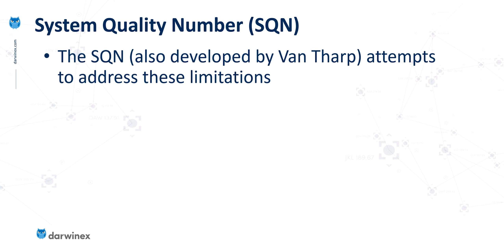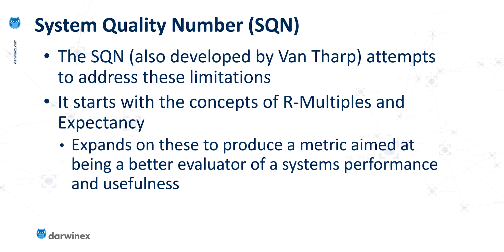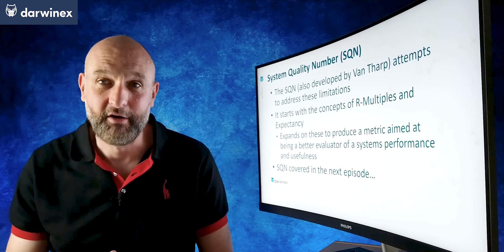But there is something that can help, and this is called the System Quality Number, or SQN — a metric also developed by Van Tharp that attempts to address these limitations directly. What we've already learned about R-multiples and expectancy is still required, because these are the fundamental building blocks of the SQN. But it expands on these concepts to produce a metric that is a much better evaluator of a system's performance and usefulness. The SQN is the topic of the next episode.